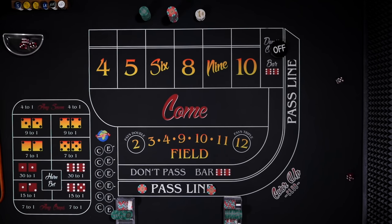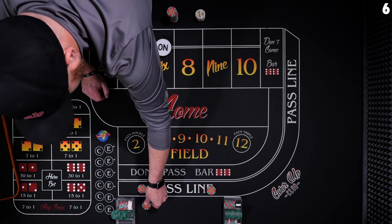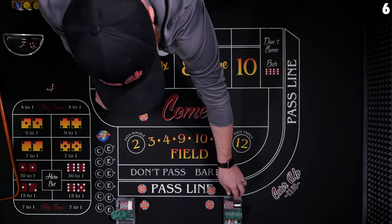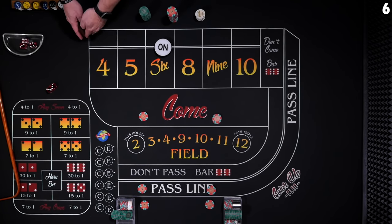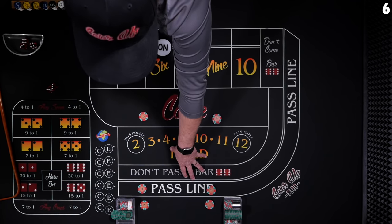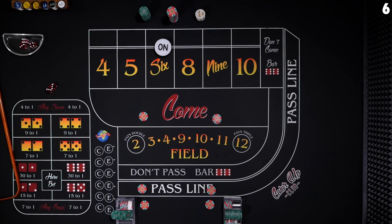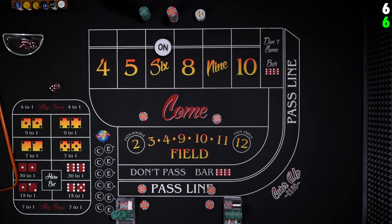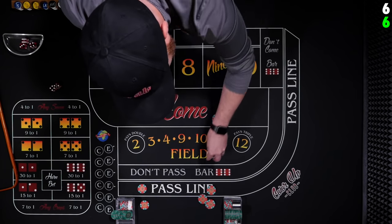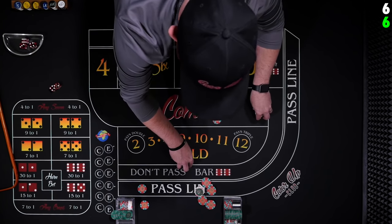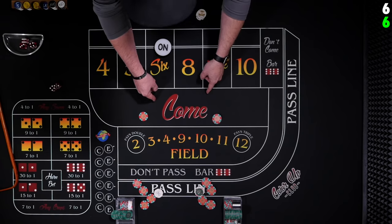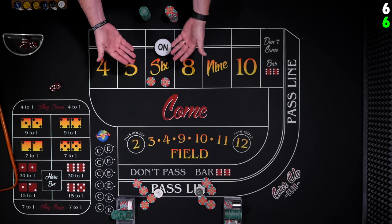New shooter — six the hard way is our point. We mark that up and place our odds behind the line — these are self-service odds, placed ourselves. We get our come bets down: $5 and $10. Anything that happens up in the dealer's area is theirs; anything down near the pass line, players can handle themselves. Six right back — point winner! The dealer pays $12 for the odds and $10 for the front; for the five dollar player, $6 for odds and $5 for the line.